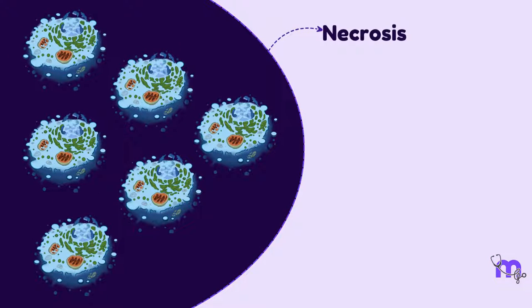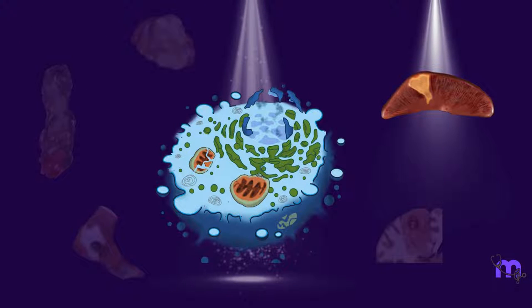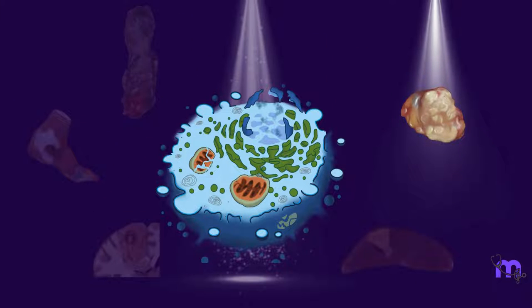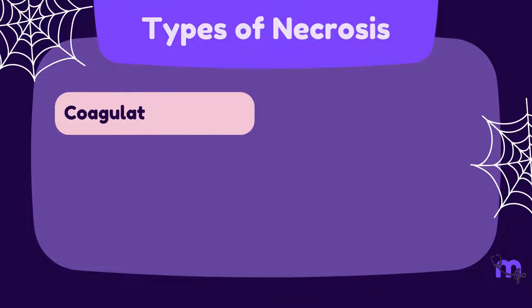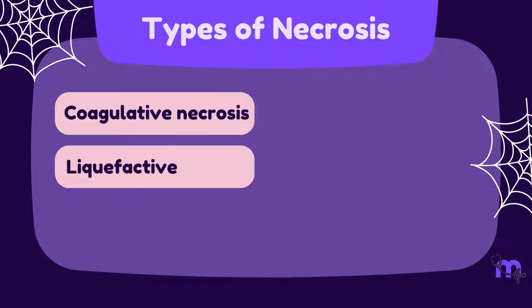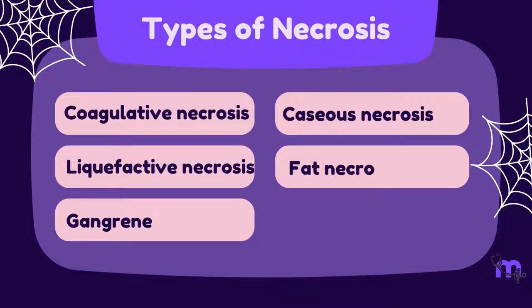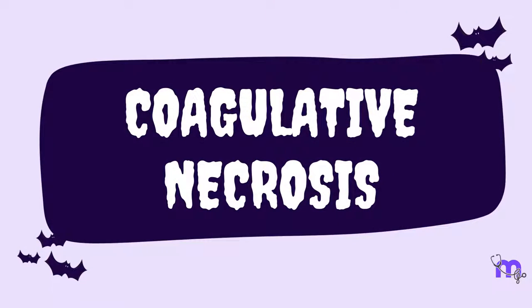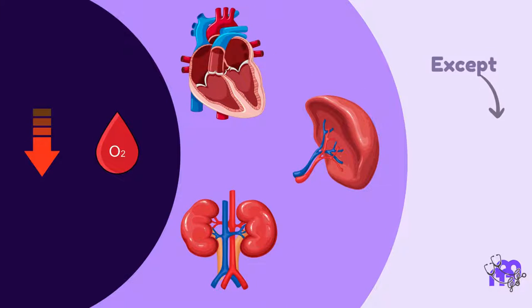When many such cells undergo necrosis, it can lead to the death of the tissue or the entire organ. Necrosis can have many morphological forms depending on the type of injury and organ affected. The various types are coagulative necrosis, liquefactive necrosis, gangrene, caseous necrosis, fat necrosis and fibrinoid necrosis. Starting with coagulative necrosis — it is caused by ischemia in any solid organs, except the brain.